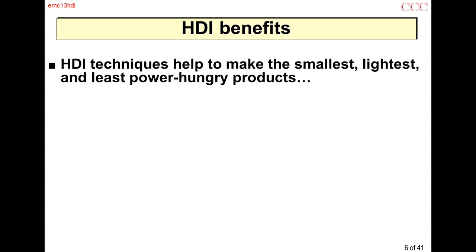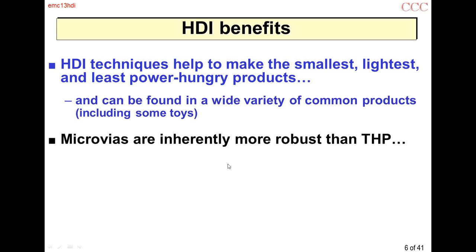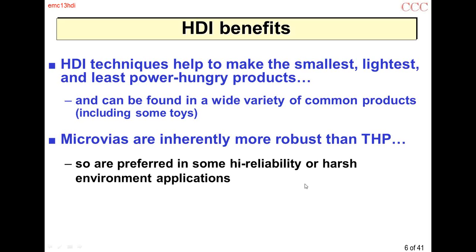Microvias are used to make the smallest, lightest, and least power-hungry products, found in a wide variety of mass-produced products including some toys. They're inherently more robust than through-hole plate because microvias themselves are smaller and more rugged. The military prefers them in high-reliability or harsh environments because they don't fail as often. With a very thick board, say 3mm, a half-millimeter through-hole has an aspect ratio of 6 to 1 or even up to 14 to 1 — essentially a long, thin metal tube, very liable to break.